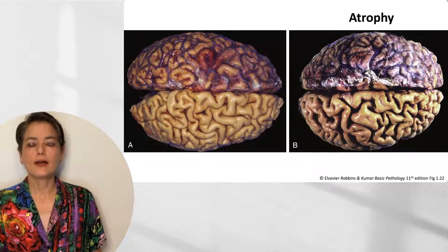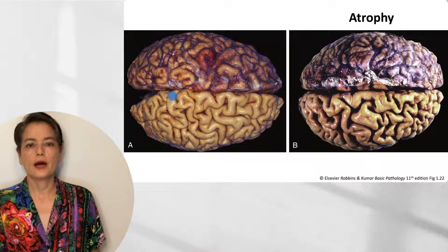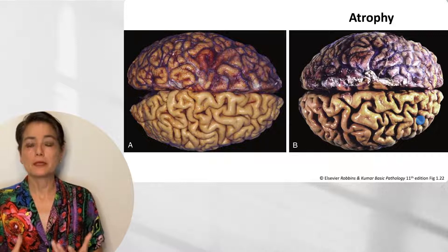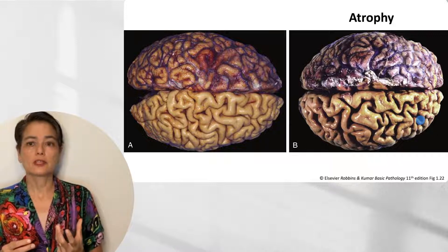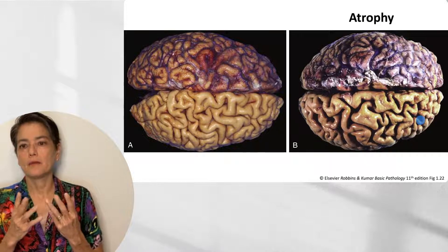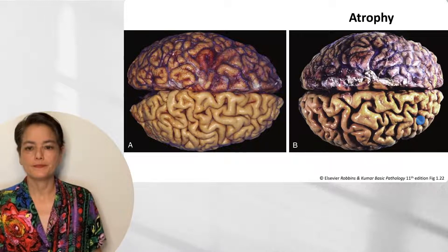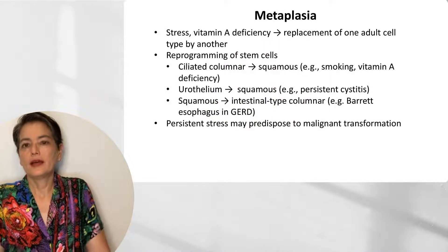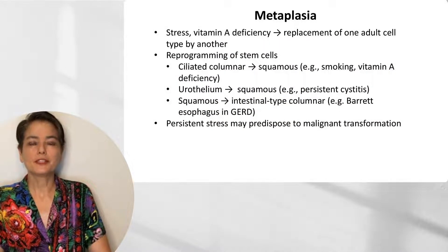Let's look at an example of atrophy. These are two brain specimens — the one on the left from a young, healthy adult with normal-sized gyri and sulci. By comparison, we have an elderly adult where you have widening of the sulci, thought to be due to atherosclerotic decrease in blood perfusion of the brain. This brings us to my favorite and most interesting of the adaptations: metaplasia.